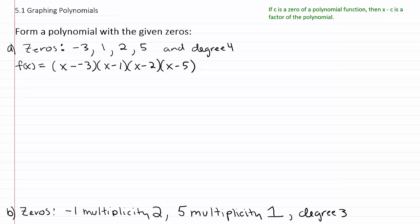So then I just have to multiply and clean this up a little bit. It's not going to give me one precise answer. Negative negative three is positive three, that's why I wrote x plus three, and then I'll have x minus one, x minus two, x minus five.